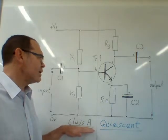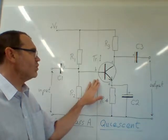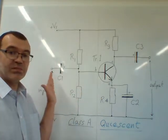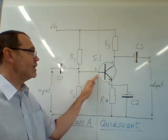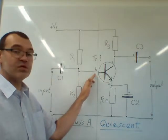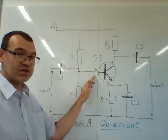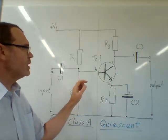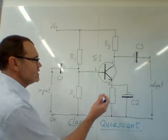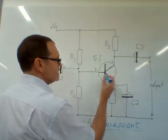Class A amplifier means the transistor is turned fully on before the signal is applied, so when the tiny signal comes in applied to the base, it will turn the transistor on slightly more and off slightly more. That's a class A amplifier.